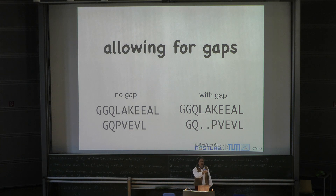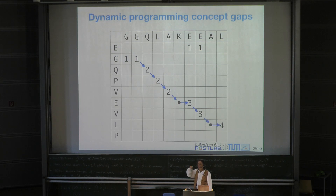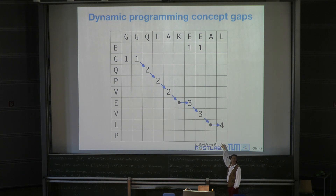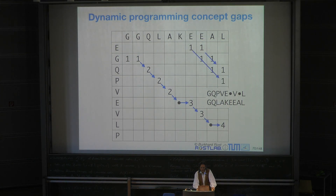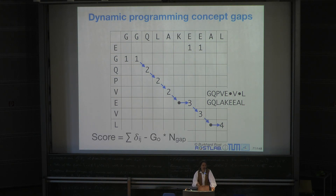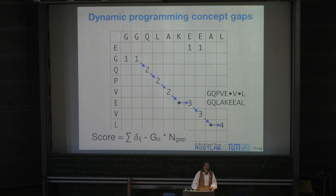There are two different definitions of optimal: one with a wild card and one without. The standard way is with a wild card. In the concept of this 2D space, the wild card essentially means you move straight rather than diagonally. There are several wild cards. I said the wild card has a cost—one way to encode the cost is to give every single wild card a fixed cost. The delta IJ function is a match: one only if i and j equal one another, zero otherwise. That gives you the score of the alignment.